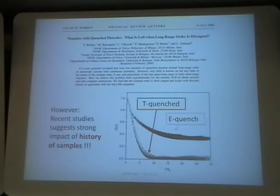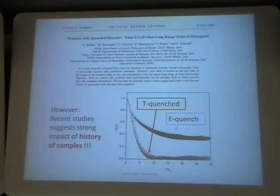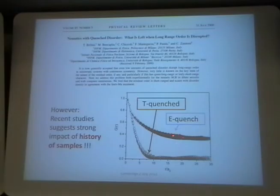There was a paper by Bellini in which they showed that if you quench the system, it seems to have short-range order. And then other students showed that it is not necessarily history-dependent — if you quench the system, you really get short-range order, and the Imry-Ma behavior should be observed. But if you quench in a strong field, you can get a completely different structure. So the system has memory. This can be used for some kind of memorization.